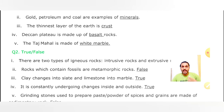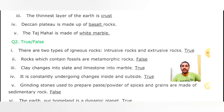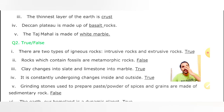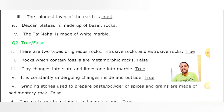Next True/False: Grinding stones used to prepare paste and powder of spices and grains are made up of sedimentary rock. Yeh galat cheez drakki hai! Grinding stones jo hain - woh marble grinding rad - kis tarah ki rock hai? Metamorphic rock! Changed form hokar limestone se banti hai. Toh yeh cheez galat drakhi hai - grinding stones jo hain, woh metamorphic rock se bante hain, sedimentary se nahi.